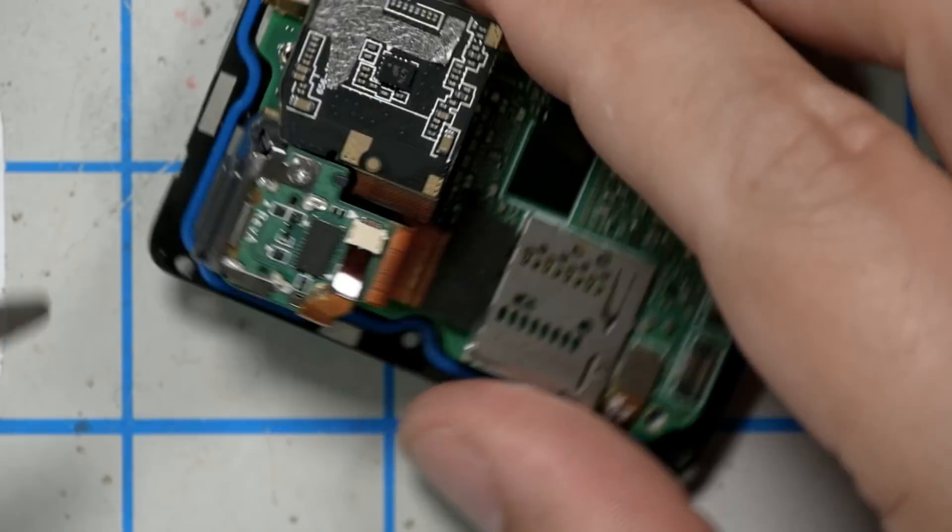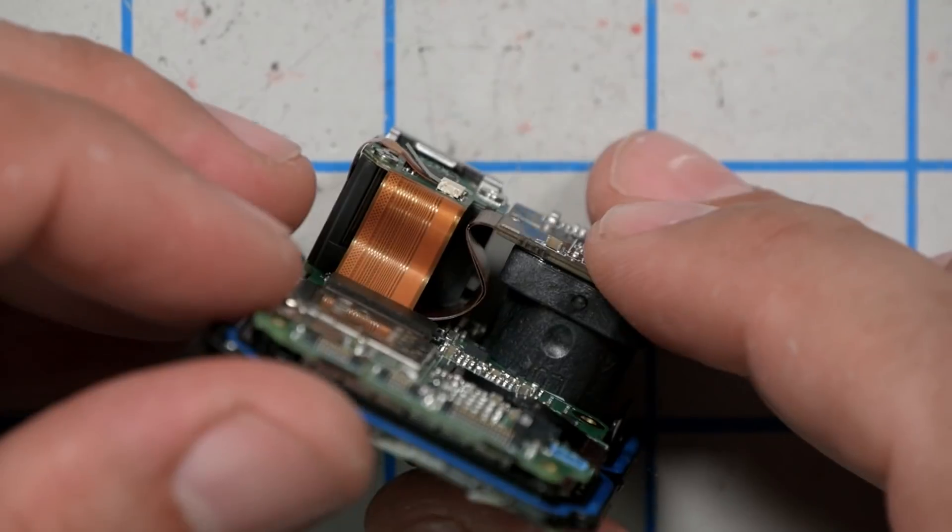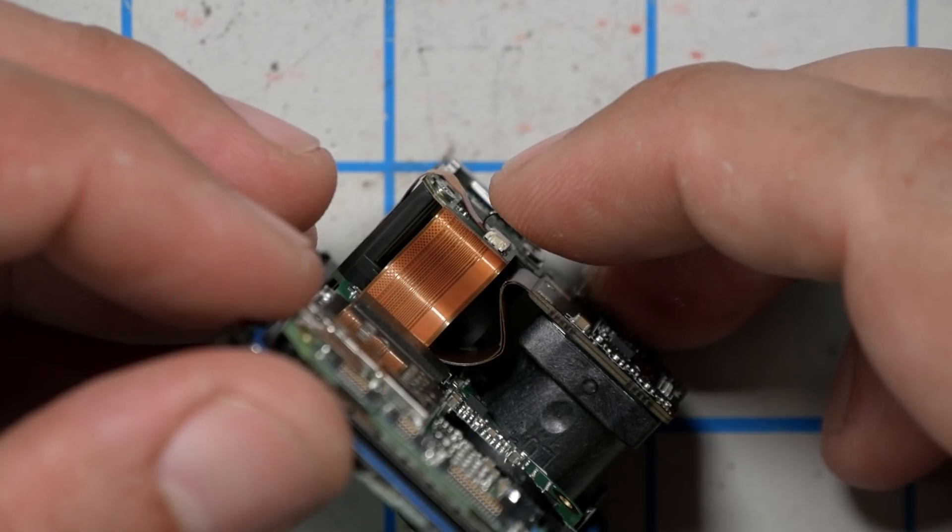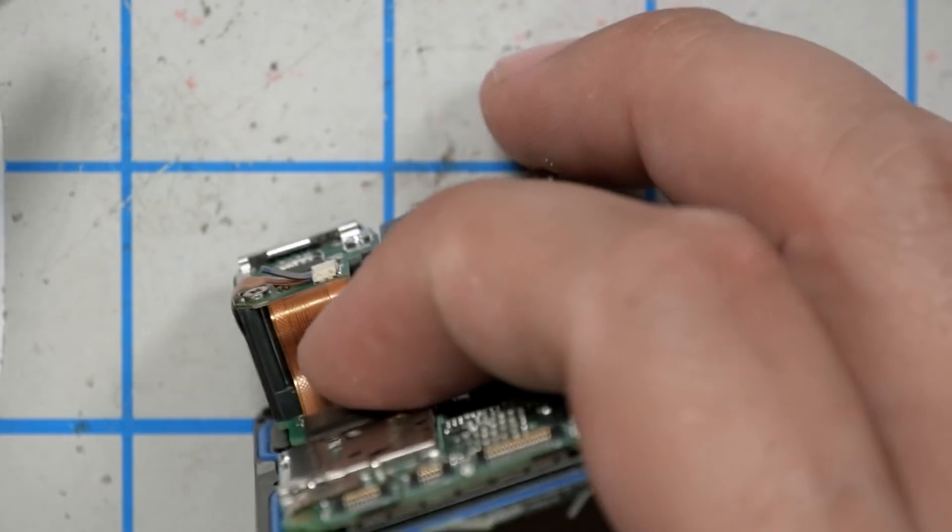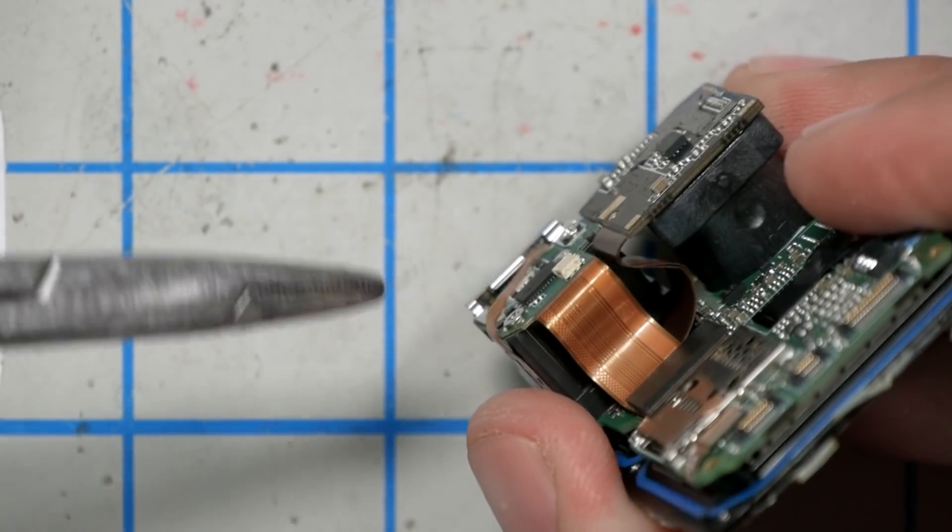Next, we're going to pull out this ribbon cable right here. And this does not appear to be like a locking connector. It's just friction fit. Notice that there's a tiny little tab right here. See this tab? This is not part of the ribbon cable. Don't pull on the ribbon cable. Pull on this tab. That's why it's there. I ripped off the tab. Don't do that.